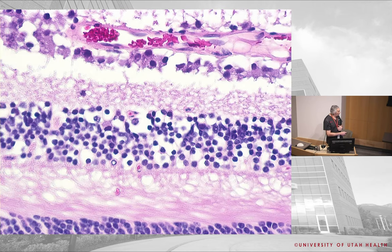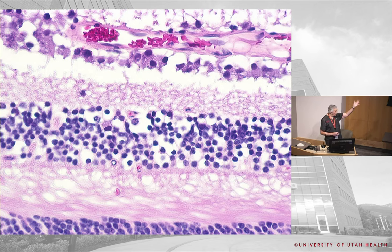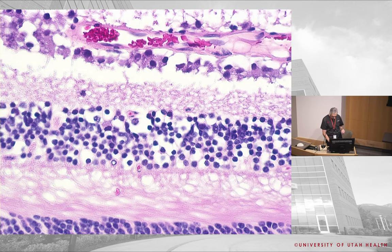In the area right next to the center of the fovea, the fibers run almost obliquely — we call that Henle's layer. Henle's layer is important because that is where cystoid macular edema starts up.